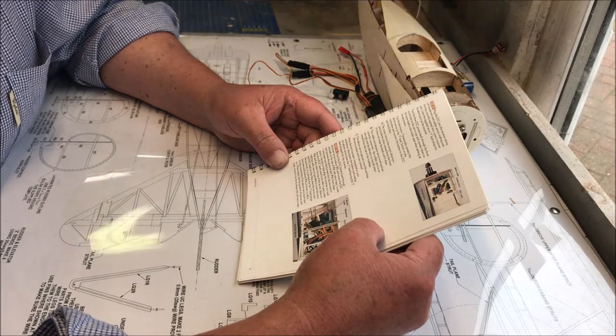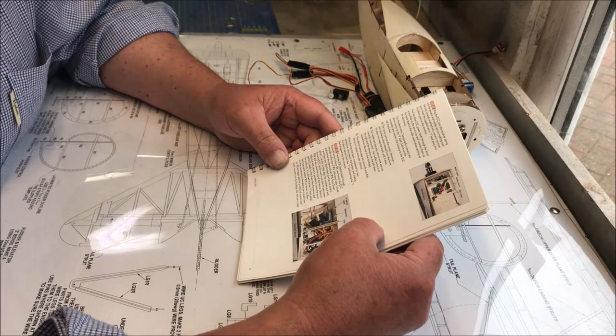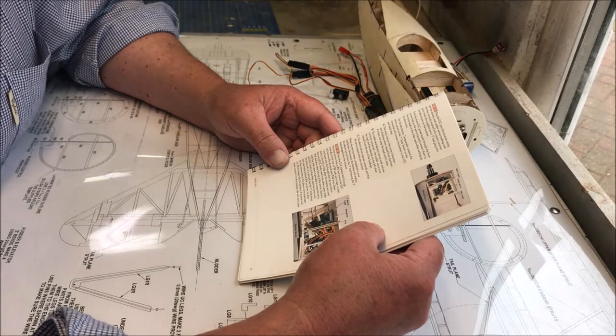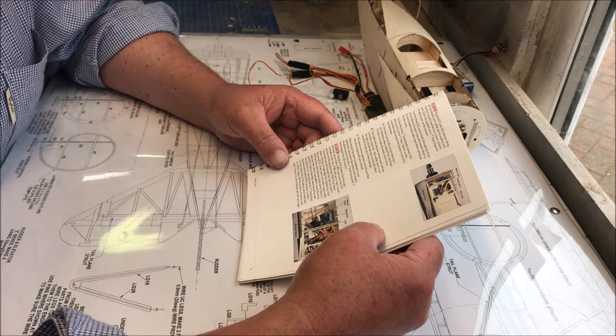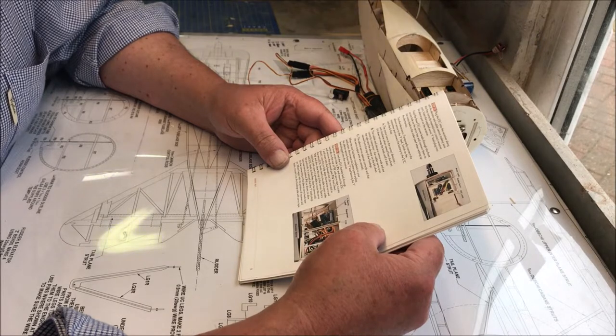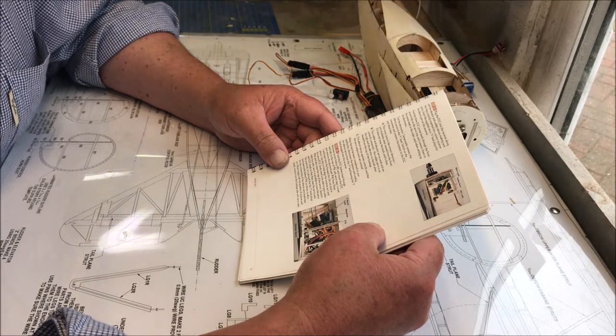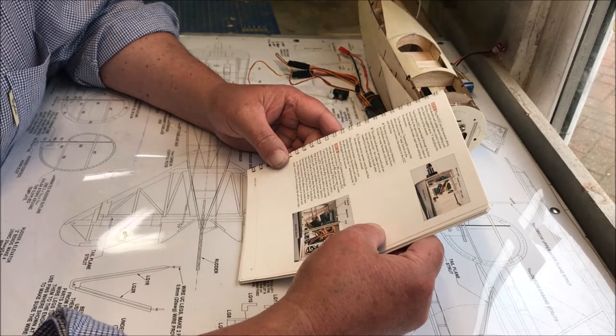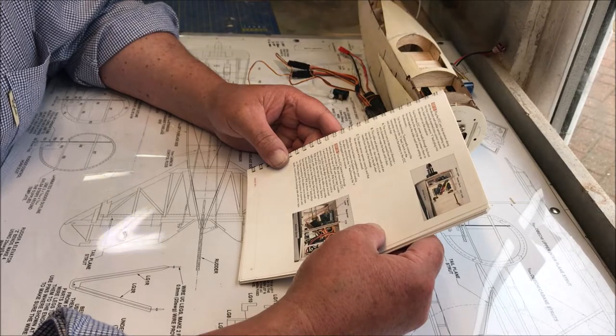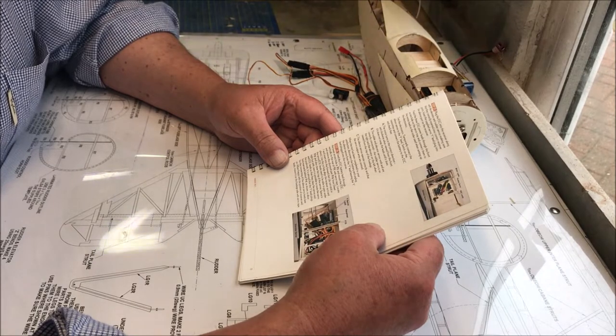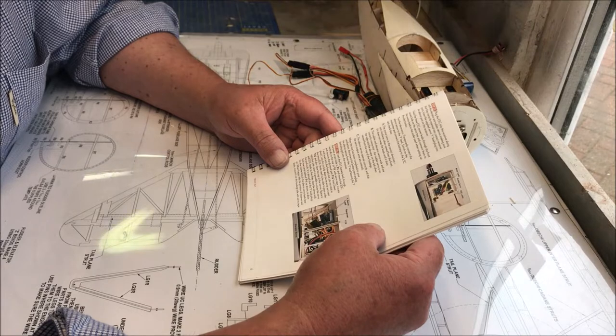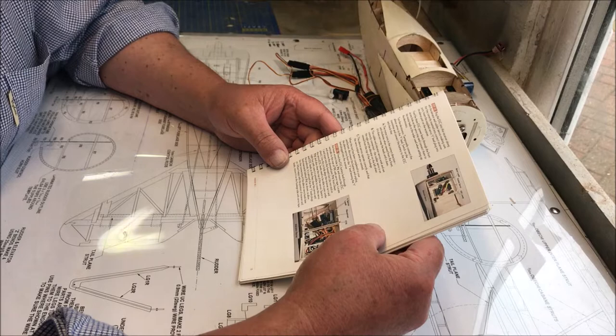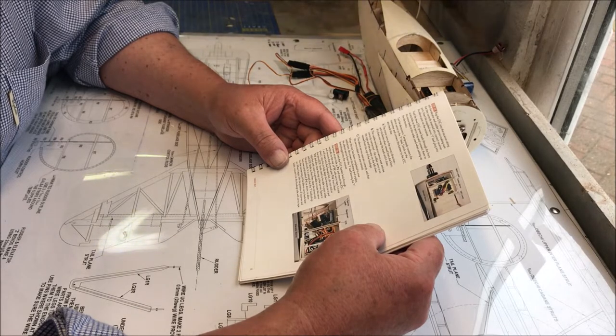Temporarily connect the aileron servos to the Y-lead, switch on the transmitter and connect the battery to the ESC. Check that the motor turns correct direction, anti-clockwise when viewed from the front. If it does not, swap the leads. Check the rudder and elevator servos work correctly. The rudder servo is on the right and the elevator on the left when viewed from the top of the fuselage.